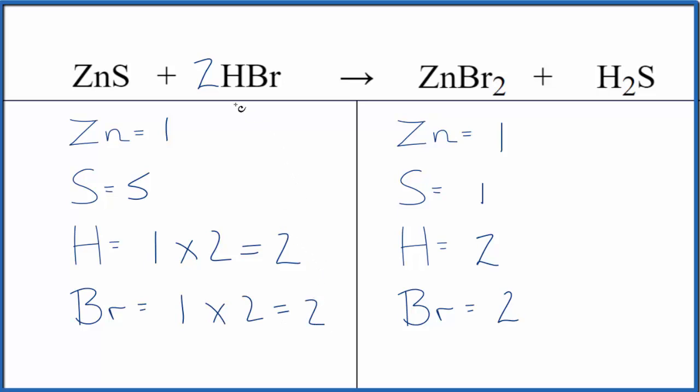If you want to look at the type of reaction, the zinc and the hydrogen are changing places. So zinc starts out with sulfur, ends up with bromine. The hydrogen that starts with bromine ends up with sulfur. This is a double displacement reaction.